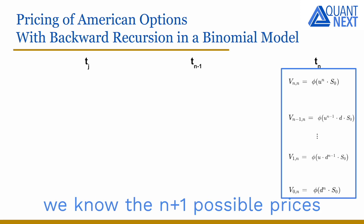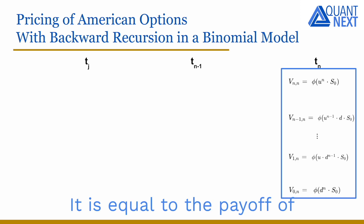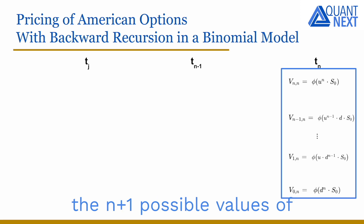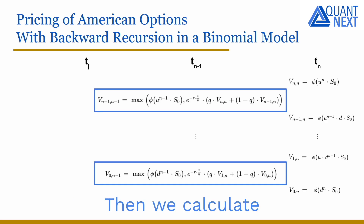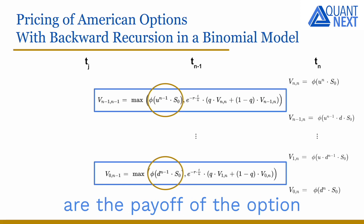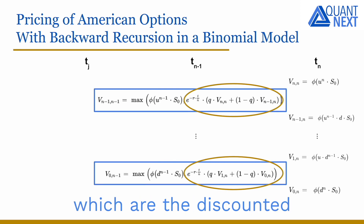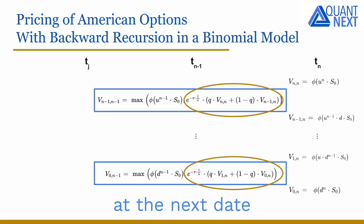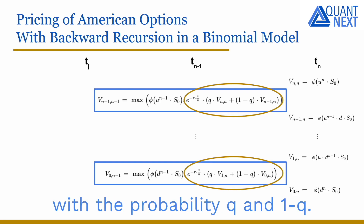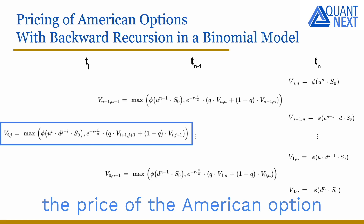In this binomial framework, we know the N plus 1 possible prices of the American option at the final date Tn — it is equal to the payoff of the option applied to the N plus 1 possible values of the underlying asset price. Then we calculate the N possible prices for the American option at the previous date by applying the backward recursion formula. The possible values of exercising the option are the payoff applied to the N possible values of S, while the possible values of keeping it — the discounted expectations of the values of the American option at the next date — are calculated from the possible values if the stock goes up or down with probability Q and 1-Q. So going backward from Tn to T0, we can calculate the price of the American option recursively.